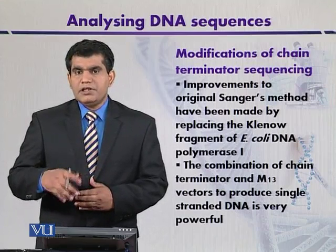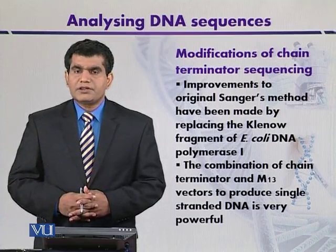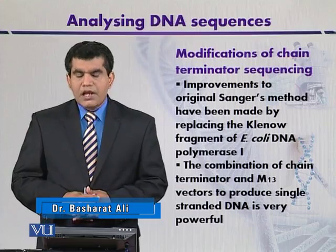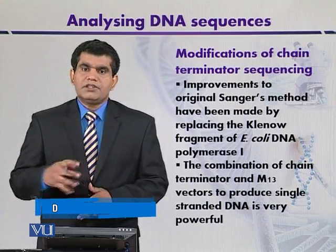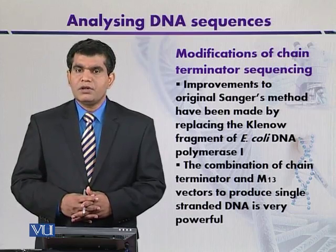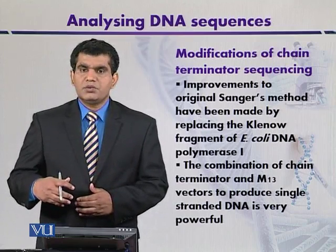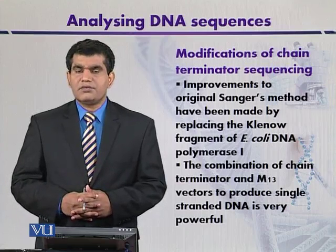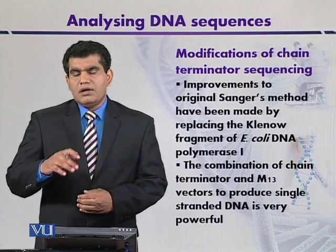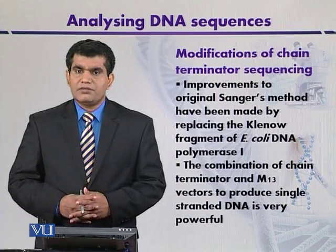In the original Sanger method, the bases or fragments were labeled with P35 phosphate. Later, this radioactive material was replaced with other isotopes like S32, and even S35 sulfur isotope was used in order to enhance the resolution of the autoradiograph. So different techniques were introduced — it is not only radioactive material that one can use for the detection of DNA fragments.